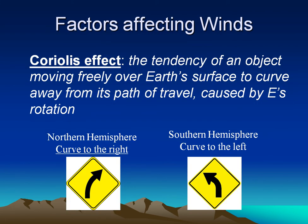Another aspect that changes the winds is something called the Coriolis effect. Since the Earth is spinning and the surface of the Earth is curved, any object moving long distances at speed over it will be forced to curve as well. In the northern hemisphere, winds and anything else moving long distances — like ocean currents, for instance — will curve to the right. In the south, it will curve to the left. This is called the Coriolis effect.